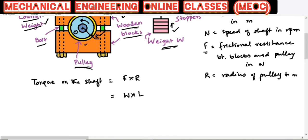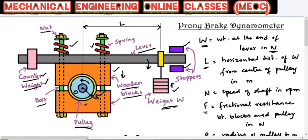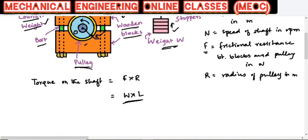That is nothing but W into capital L. W is the weight that we have added at the end of the lever whose length is L from point O. So W × L = F × R newton meters. This is the equation of torque on the shaft, or the moment of frictional resistance on the shaft, which equals F × R, which again equals W × L.